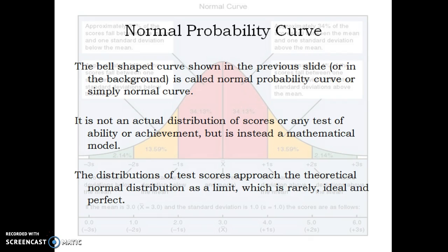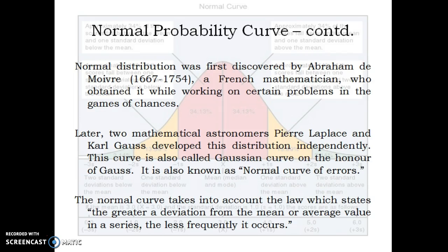It is a hypothetical curve, a mathematical model. It may not be obtained in real life or practical situations. This theoretical normal distribution is simply called the normal probability curve. This idea was first discovered by Abraham de Moivre, a French mathematician from 1667 to 1754. Later, it was developed by other astronomers, including Carl Gauss, who is very famous. So this curve is also known as the Gaussian curve. It is also known as the normal curve of errors.